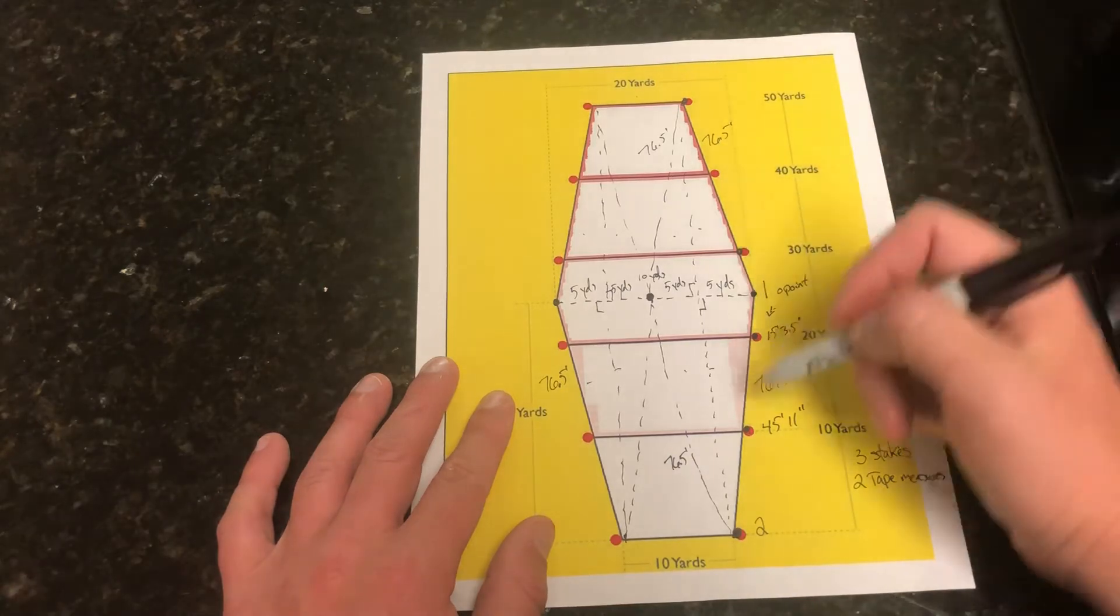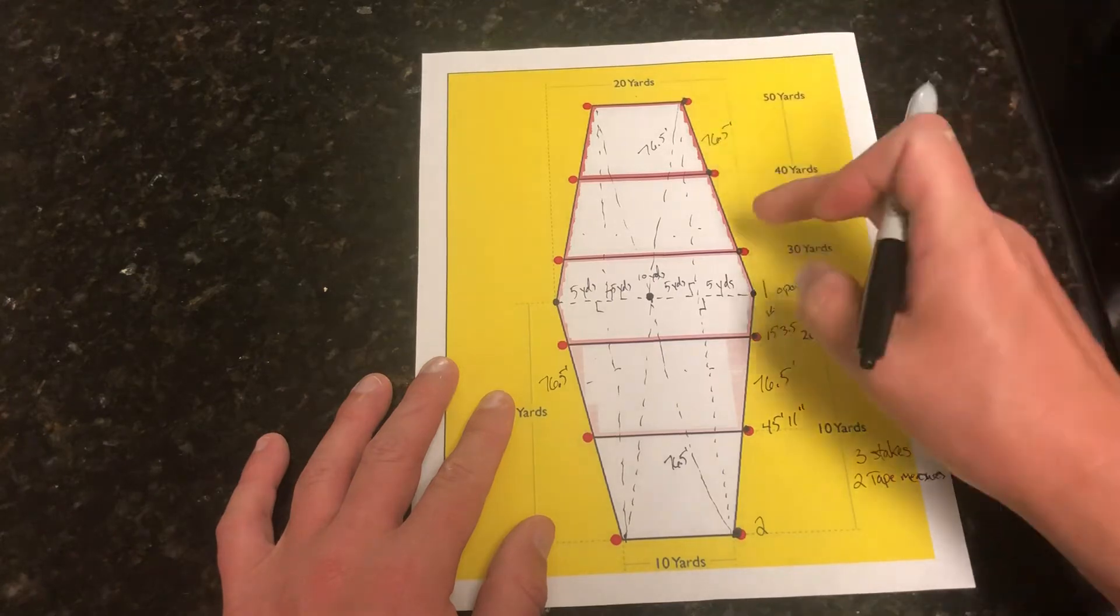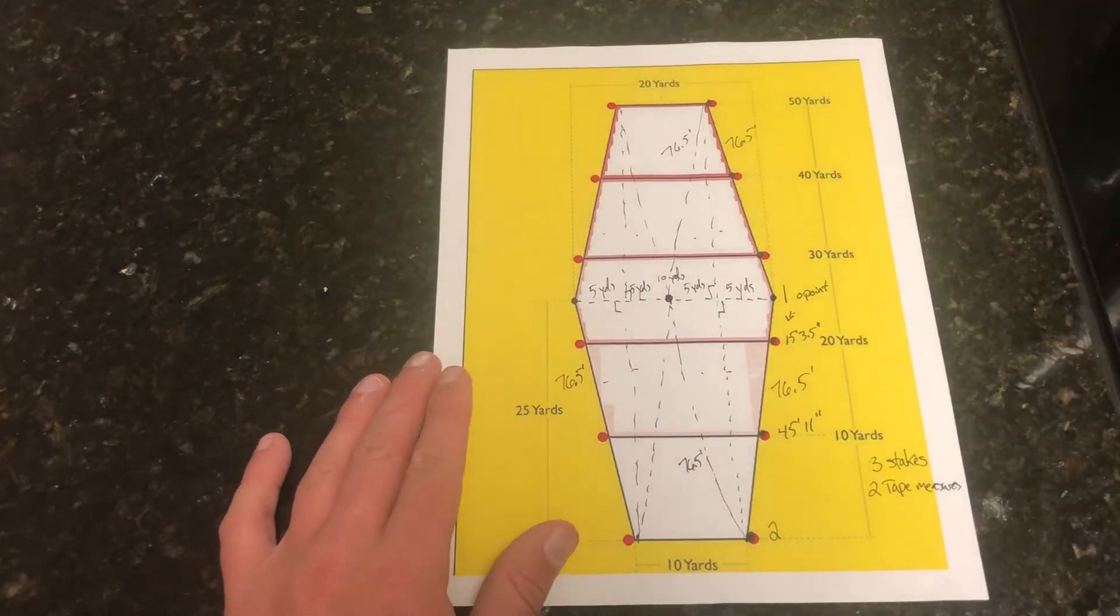You'll have your 20 yard center, your 10 yard end zones, all these will be set right. From this point, 15 feet 3 and a half inches, that's where this one goes. And 45 feet 11 inches, again that's from this point, that's where this one goes. All you got to do is repeat that process four times and you have a perfect toss and fetch field.